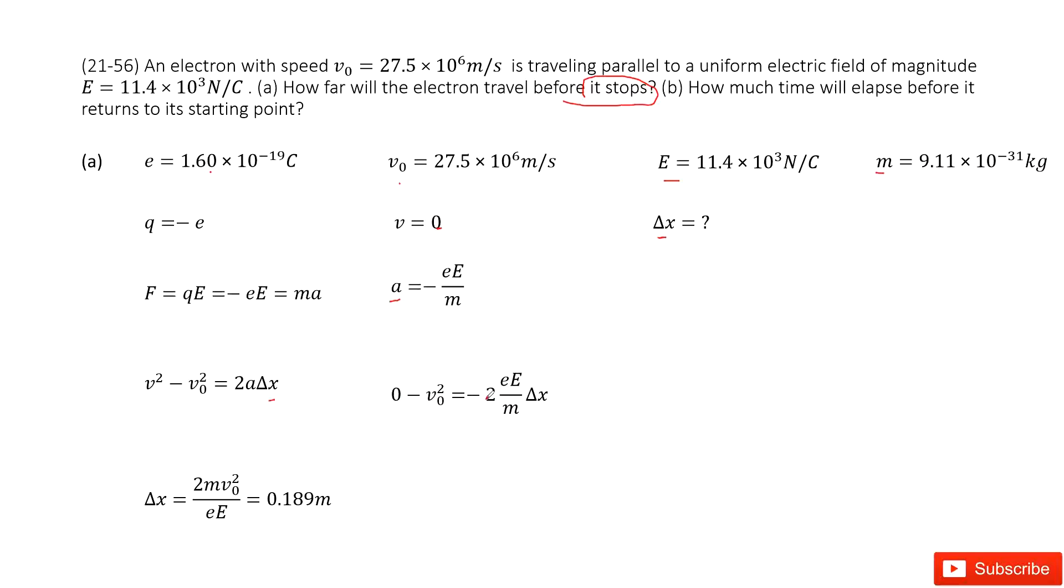So we input known quantities inside. The final speed v equals zero, and input acceleration a inside. So you can write down the function for delta x. Input all the known given quantities, you get the answer.